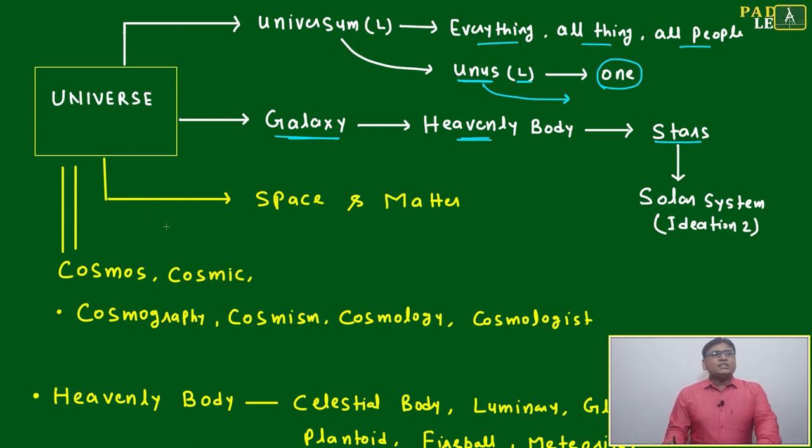Now what constitutes this universe? Only space and matter. Again 80-20 rule: 80% space, 20% matter. Any profession will go - 20% people will earn 80% of that profession money and 80% people will earn only 20%. This is proven management law and same management law God also following: 80% space, 20% matter.